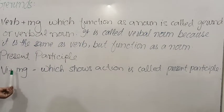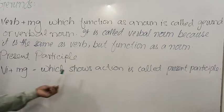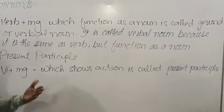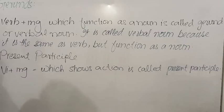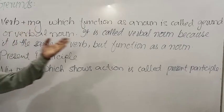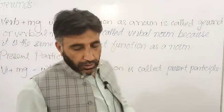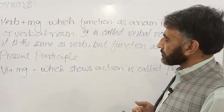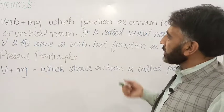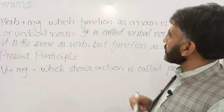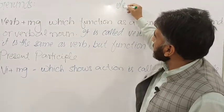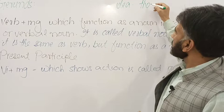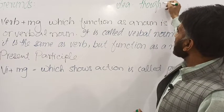Present participle is verb first form plus -ing which shows an action. When it shows action, then it is present participle. When it is used as a noun, then it is gerund. For example, when used as a noun, it talks about an idea, a thought, or a point of view.